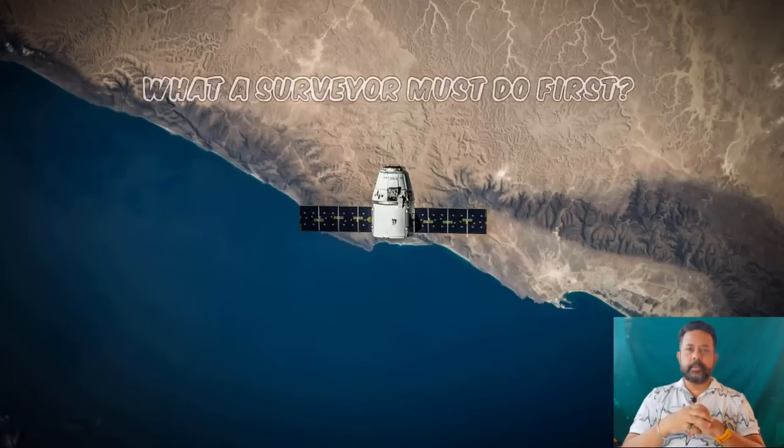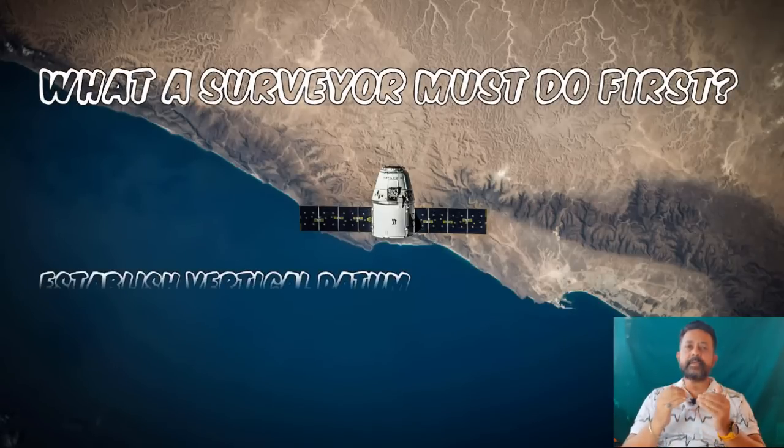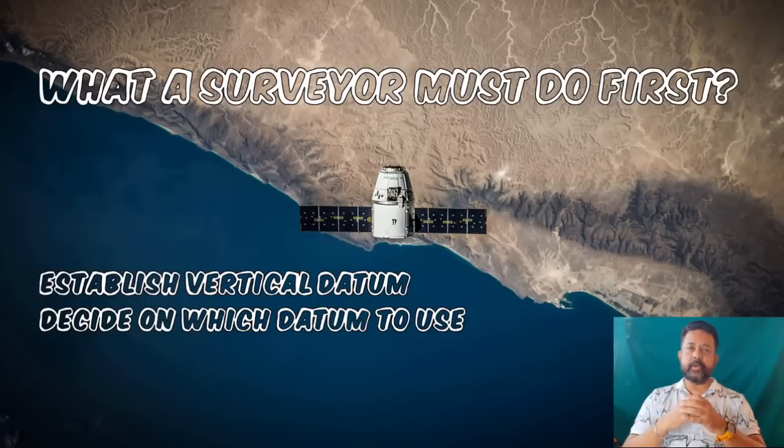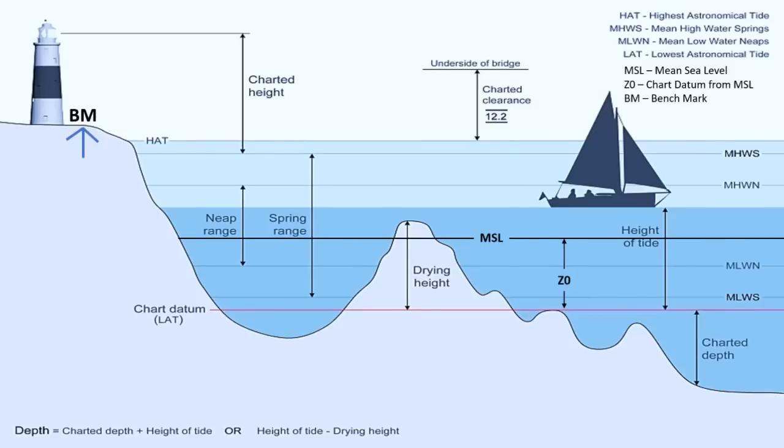So what should you do? The first and foremost task of a surveyor is to establish vertical datum throughout the survey area so as to measure tide accurately. So we need to decide first what kind of vertical datum that we need to establish. Mean sea level, lowest astronomical tide, and chart datum are some of the most commonly used vertical datums.